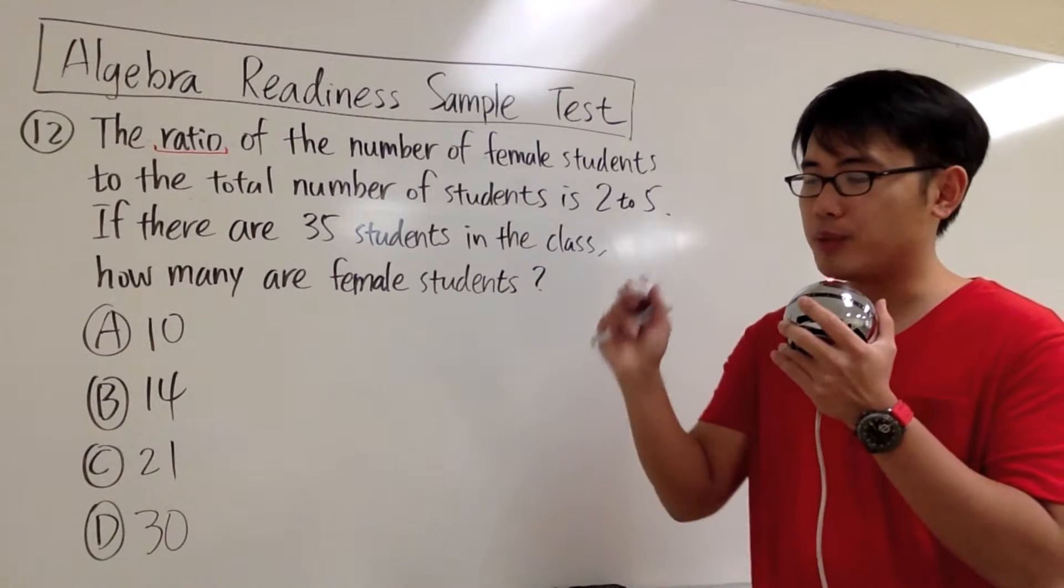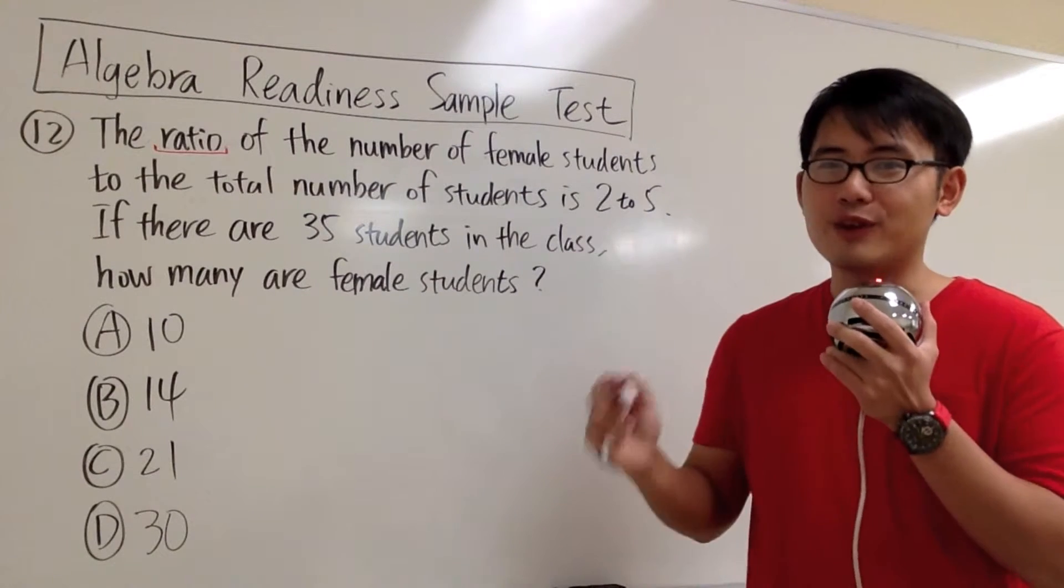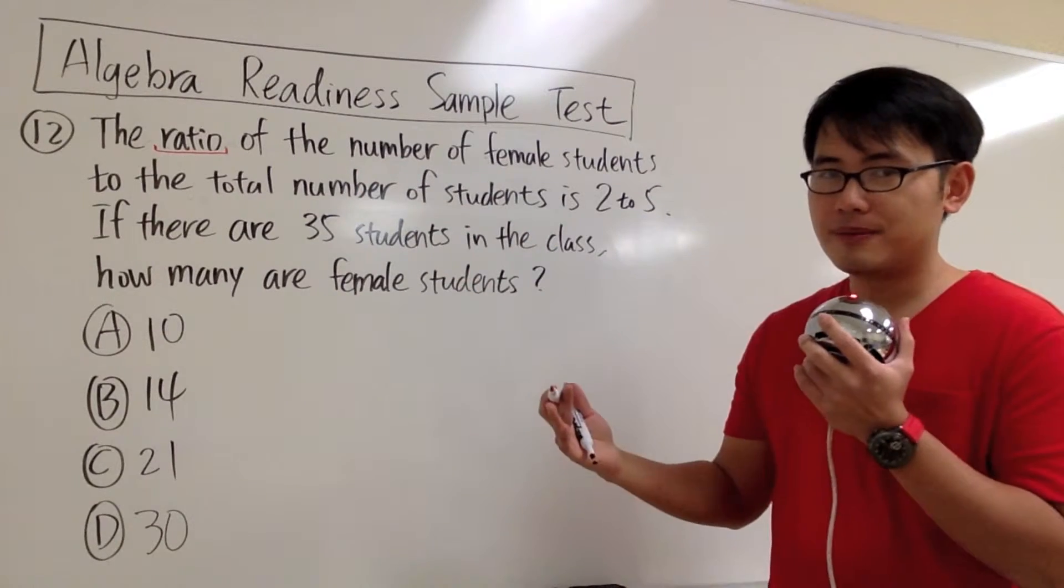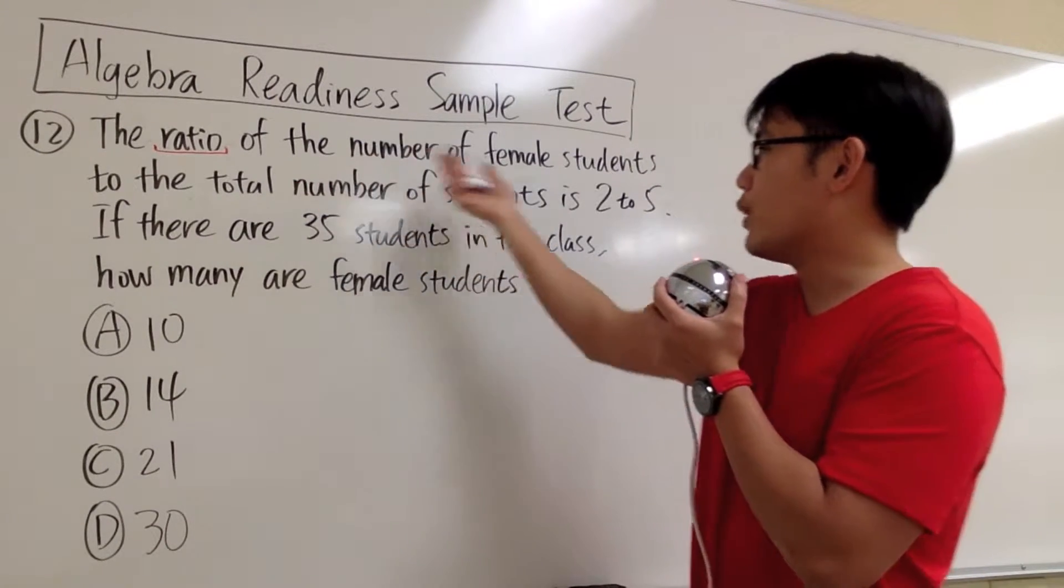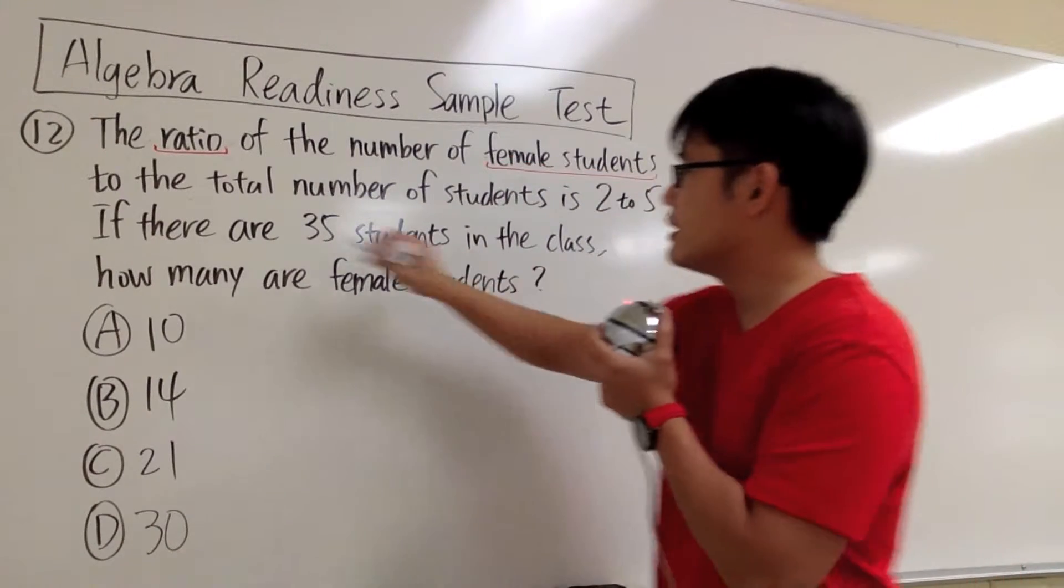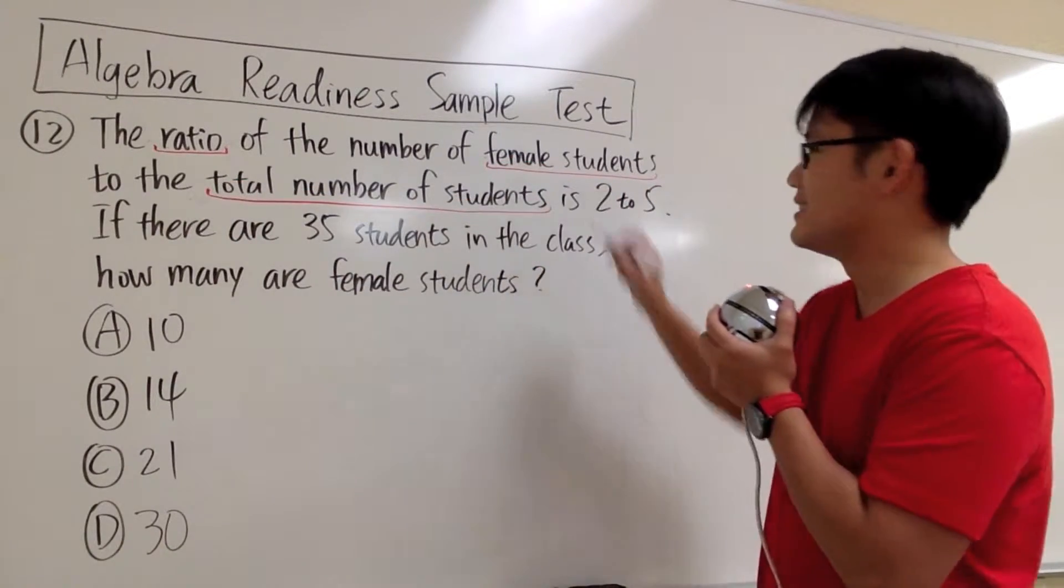Even though sometimes you may see people put the colon for ratio, to use fractions for ratio is actually easier. But the ratio of what though? We have to continue. The ratio of female students to the total number of students.